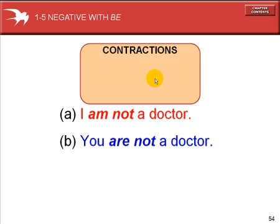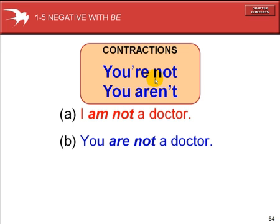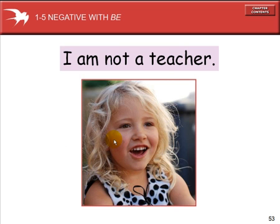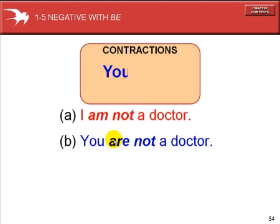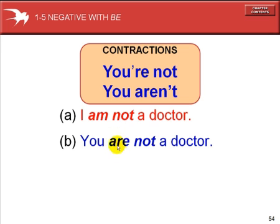You are not a doctor. You're not a doctor. You aren't a doctor. These have the same meaning. You have two options for using a contraction: you are not and you aren't. Both of these sentences have the same meaning.